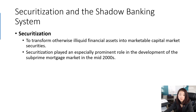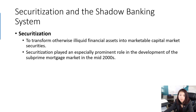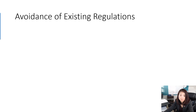Securitization played an especially prominent role in the development of the subprime mortgage market in the mid-2000s. Commercial banks lent money to homeowners, received mortgages as assets, then worked with investment banks who combined mortgages together, separated them into small packages, and sold them on the market. During this whole process, it wasn't only the commercial bank involved — it was the commercial bank, investment bank, capital market, and monetary market all working together. That's why this whole process is called the shadow banking system.